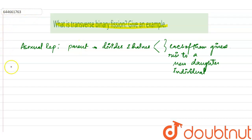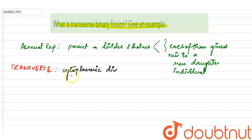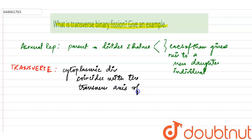Now, what is special about transverse binary fission? In transverse binary fission, the cytoplasmic division coincides with the transverse axis of the individual.